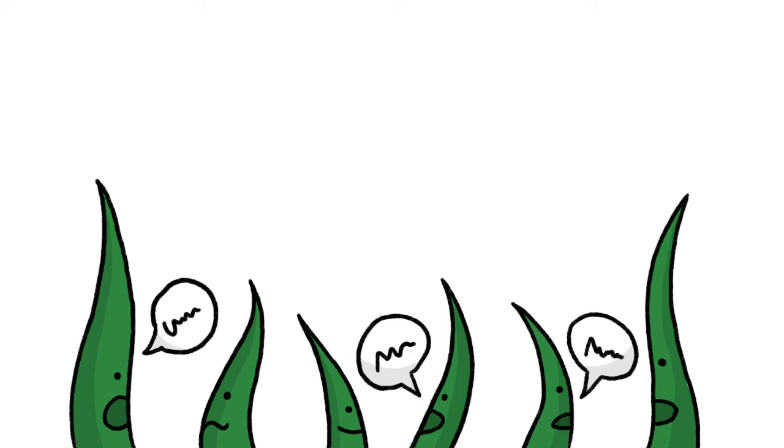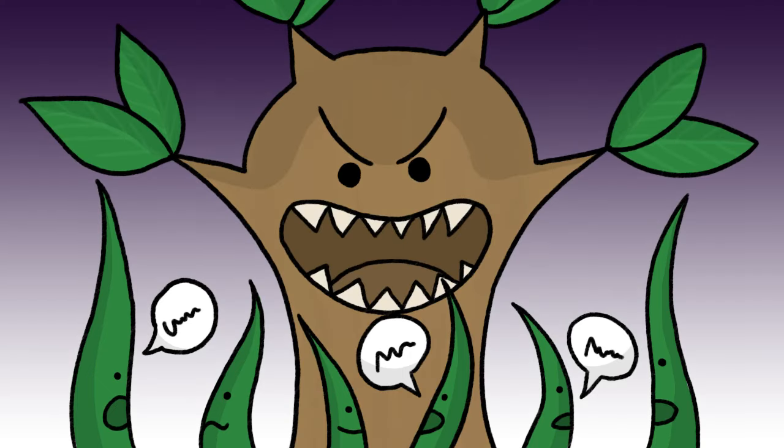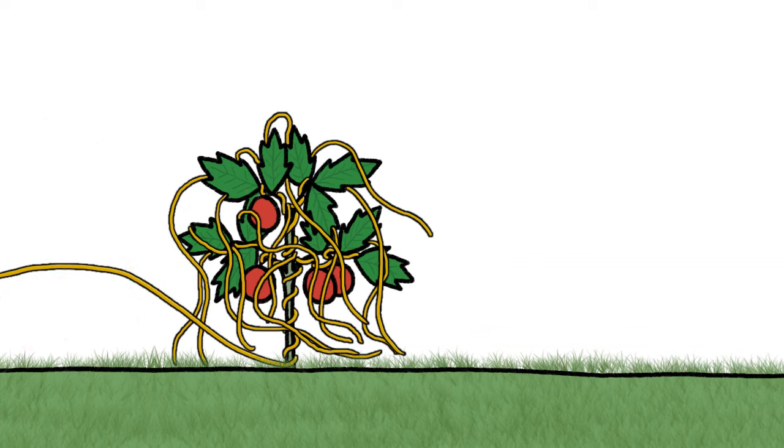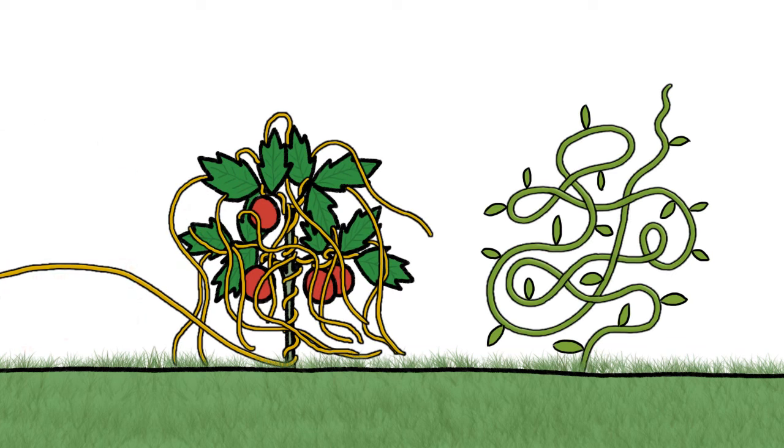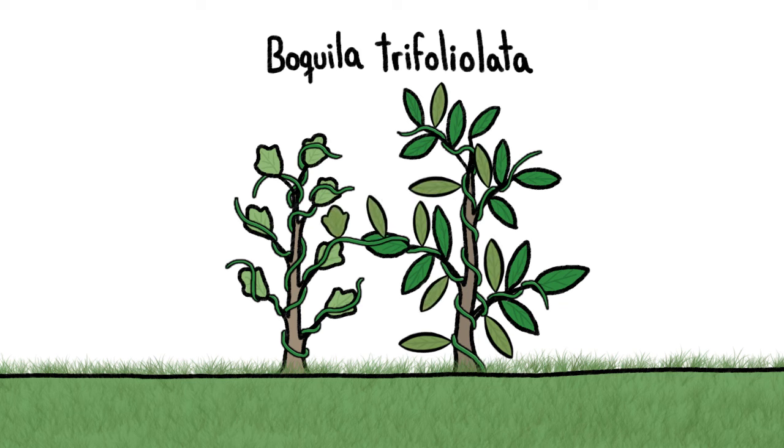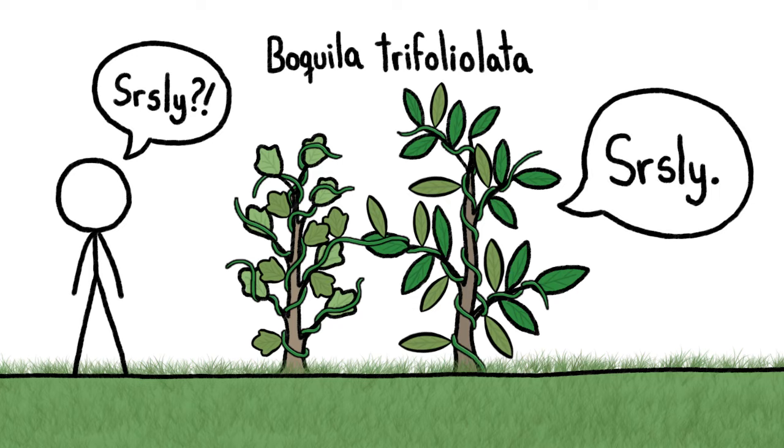However, plants can also use what they learn about their neighbors for nefarious purposes. Parasitic daughter vines sniff out and steer towards their preferred hosts, instead of flailing around blindly. Another vine somehow grows leaves of different shapes and sizes to match those of the tree or shrub it's climbing on, using its host for both support and camouflage.